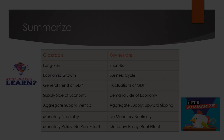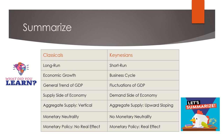Let's summarize. For the Classicals, the assumption is based on the long run; for the Keynesians, it is based on the short run. Classicals believe in economic growth; Keynesians believe in business cycles. Classicals base their assumption on the general trend of GDP; Keynesians on fluctuations of GDP. Classicals see the supply side of the economy; Keynesians see the demand side. For the Classicals, the aggregate supply curve is vertical; for the Keynesians, it is upward sloping. The Classicals base their assumption on monetary neutrality; Keynesians see no monetary neutrality. The Classicals believe there is no real effect of monetary policy, while the Keynesians believe the effect of monetary policy is real.